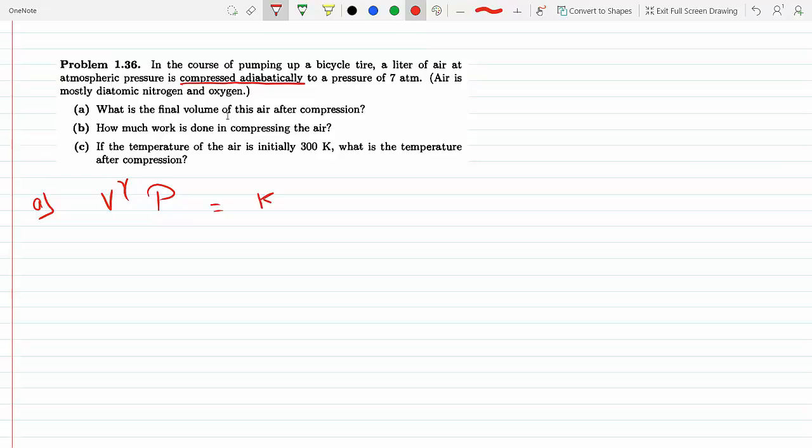Gamma is equal to the adiabatic exponent which is equal to f plus 2 over f, where f stands for the degrees of freedom. Since we are told that air is mostly diatomic nitrogen gas...